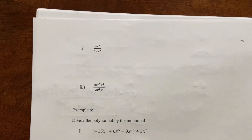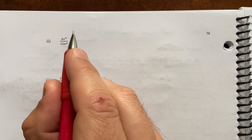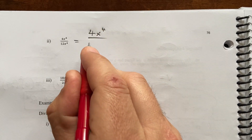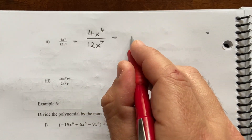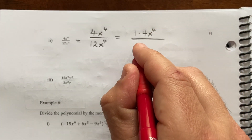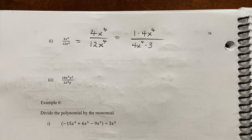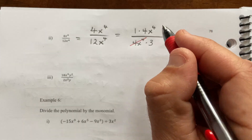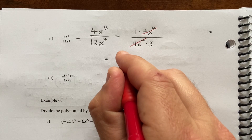Next we have 4x to the fourth over 12x to the fourth. I can think of the numerator as 1 times 4x to the fourth, and the denominator as 4x to the fourth times 3. So I have a common factor of 4x to the fourth top and bottom — I can cross that off, and all that is left is one third.